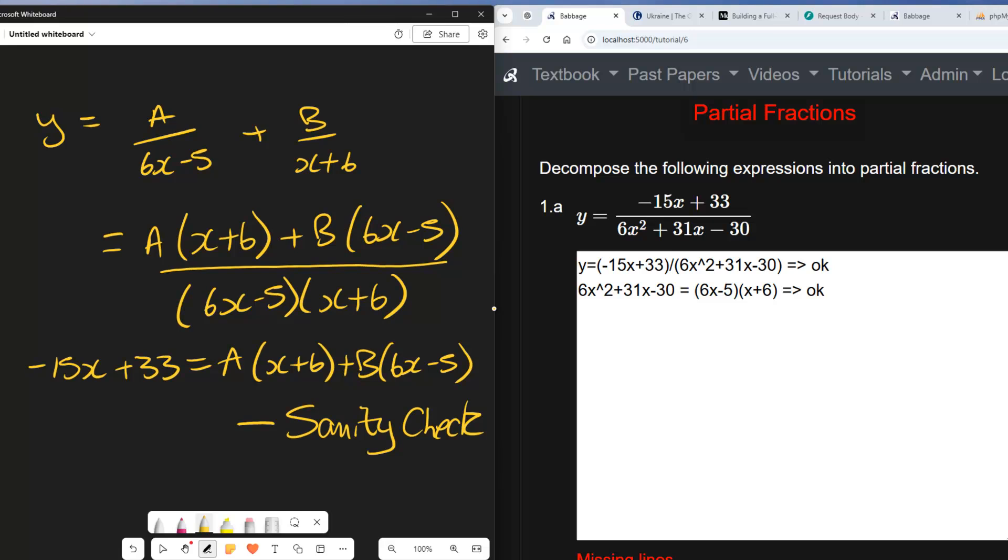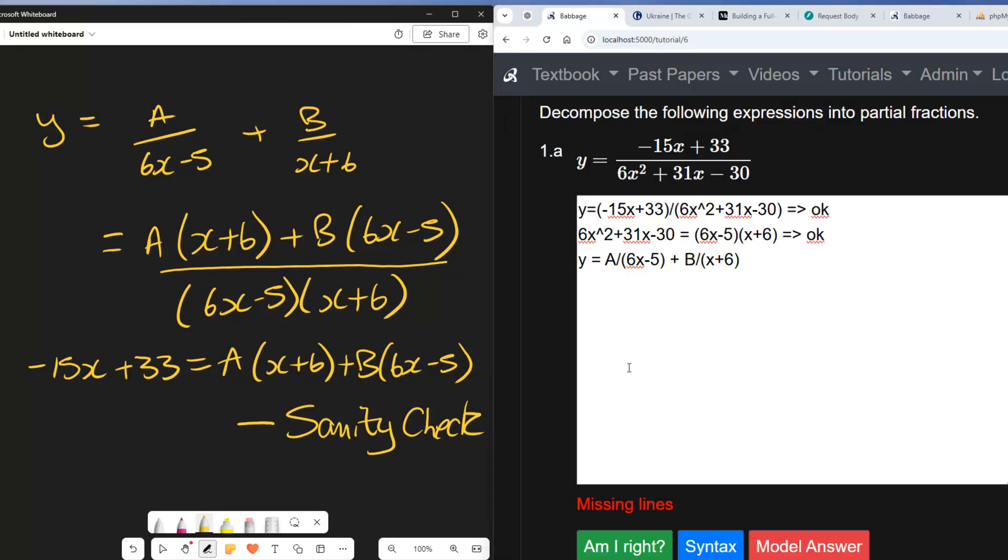Because that is the simplest way of checking whether your values for A and B are correct. So now we can write the sanity check equation, and I'll be right so far. So far so good.